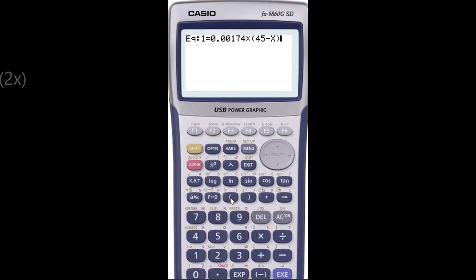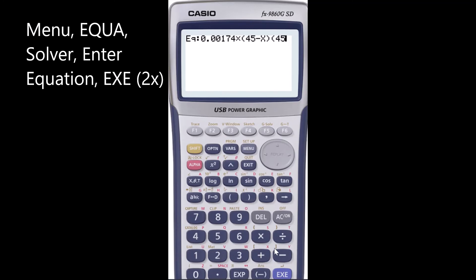So 45 minus x into 45 take away x theta t, then you close the bracket and then you enter execute twice. This gives you the value that we are after: 21.03.